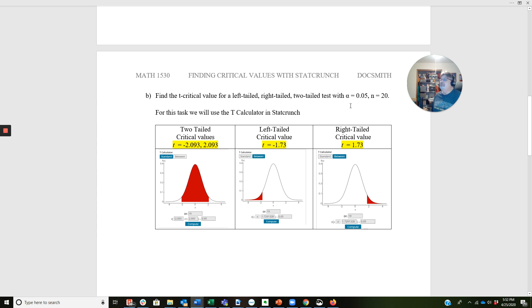I do 1 minus 0.05. I'm using the between function again with the T calculator. Notice I do 20 minus 1, which is 19 for the degrees of freedom right here. We're going to see that on the next problem as we walk through that. And when I do that, I get T critical values of negative 2.093 and 2.093 for a two-tailed test. I'm expecting both a negative and a positive critical value.